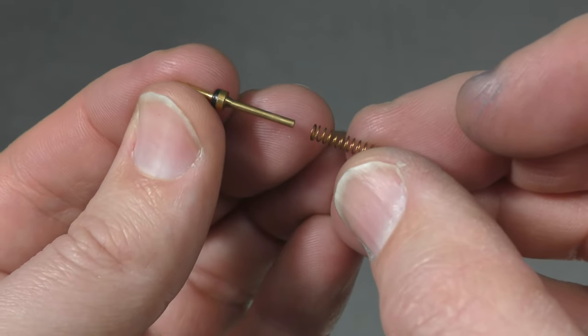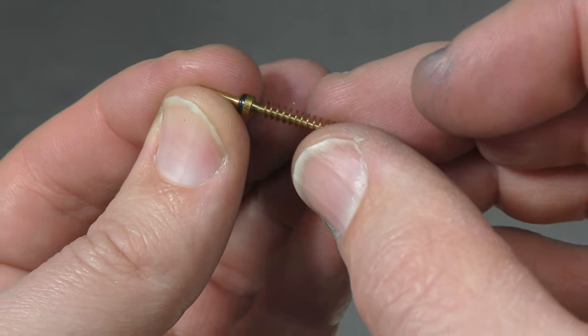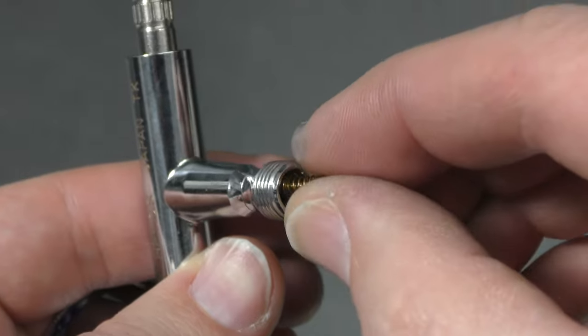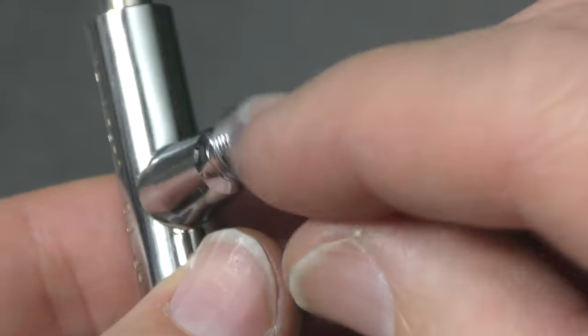What I want to do first is grab that air piston, slide the spring on there carefully, and then drop it back into the base of the airbrush like so.